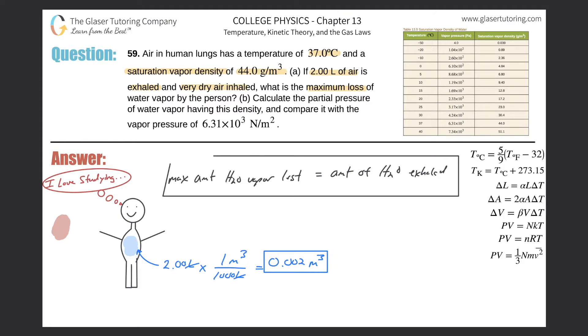They told us that the air inside the lungs is at 37 degrees Celsius. They also told us the saturation vapor density—what does that mean? That's the maximum amount of density, or max density of water vapor per volume. The saturation vapor density or max density of water vapor in that air is 44.0 grams per cubic meter.